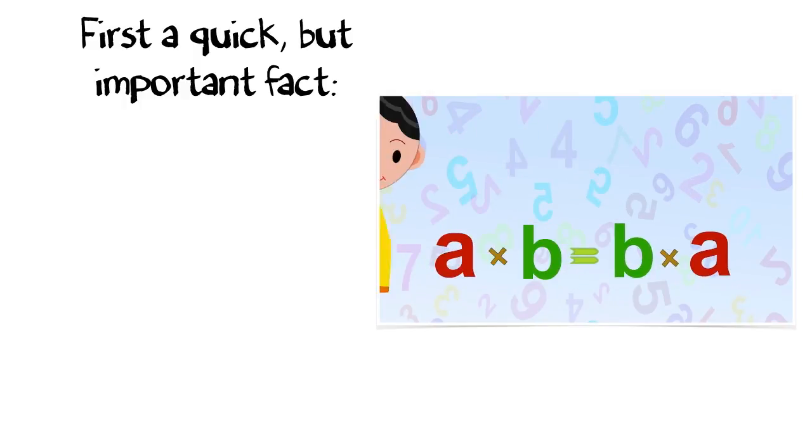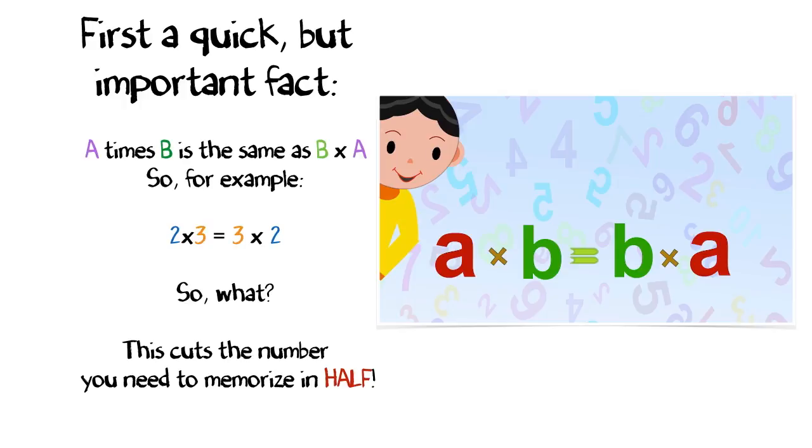A times B is the same as B times A, so for example, 2 times 3 also equals 3 times 2. So what does that mean? This cuts the number you need to memorize in half.